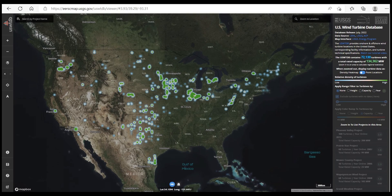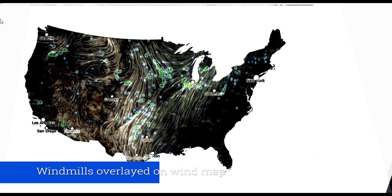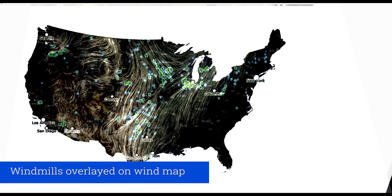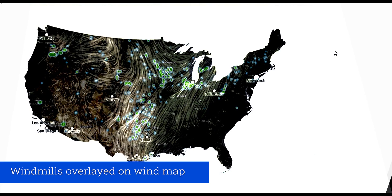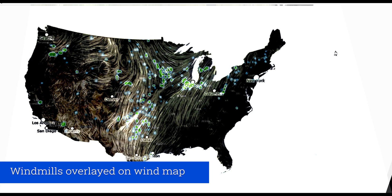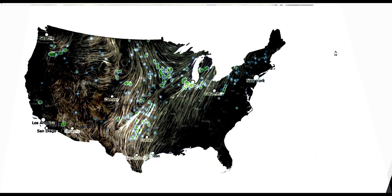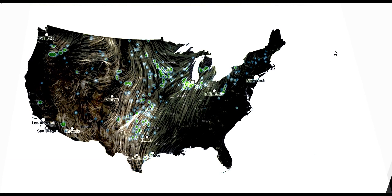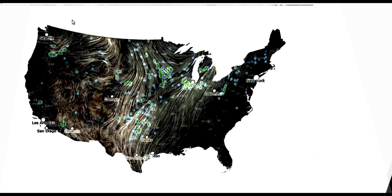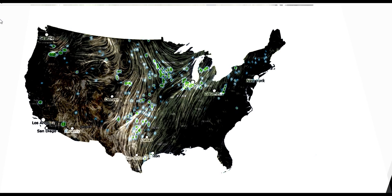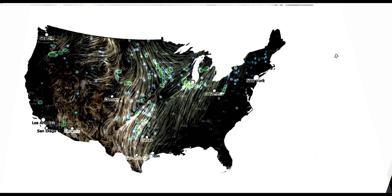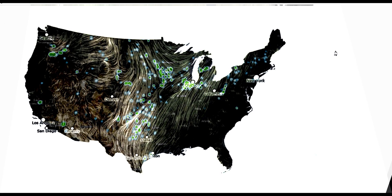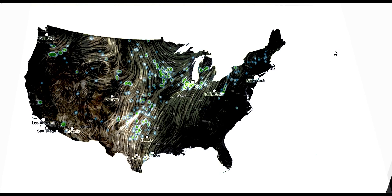We can also show the windmills overlaid on the wind map. On this particular day, you can see that the windmills are very well suited to where they're placed — they're put in the high wind areas, at least for this day.